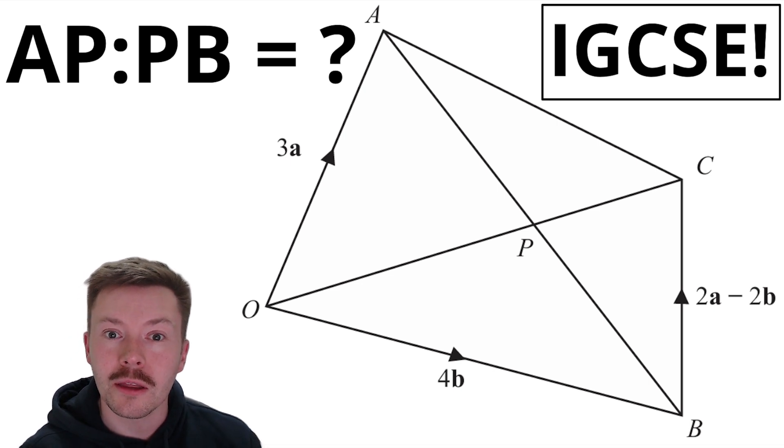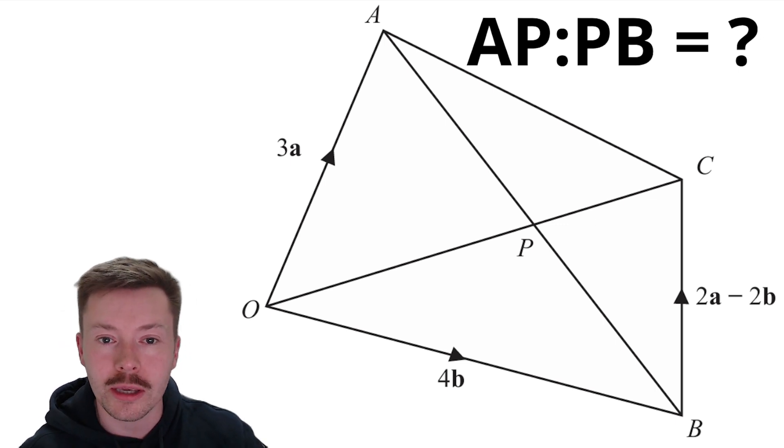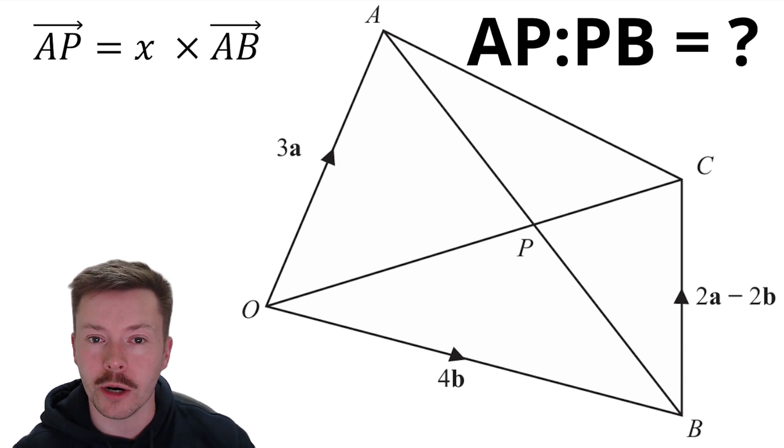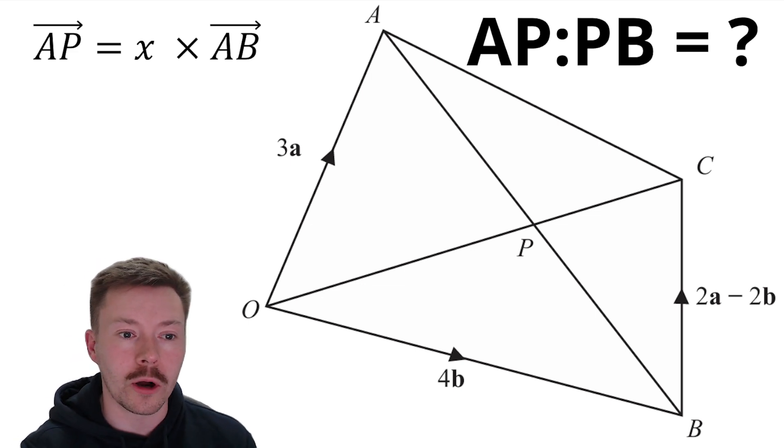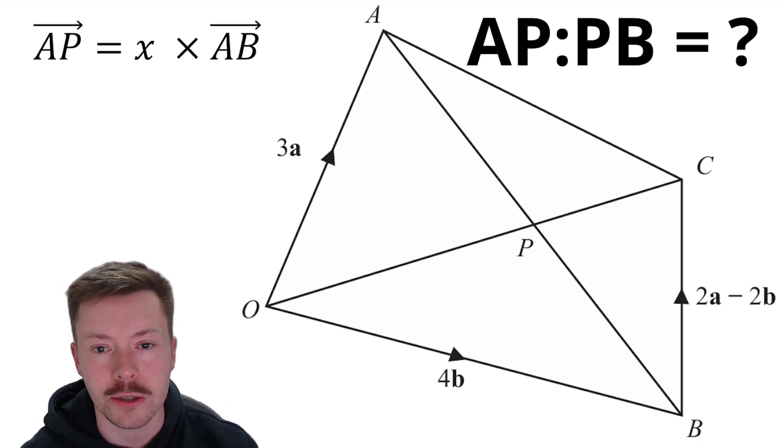Okay, so the first thing that I would want to do is to try and think about the way that I can get or the ways I can get from A to P. Now, one of the ways of doing that is by doing a fraction, a multiplier, a scale factor of the full line AB. Okay, AP is some fraction of AB and we're going to multiply AB by X. Now, sometimes you might see this as lambda or mu, symbols often associated with vectors, but you can use X and Y like I'm doing here.